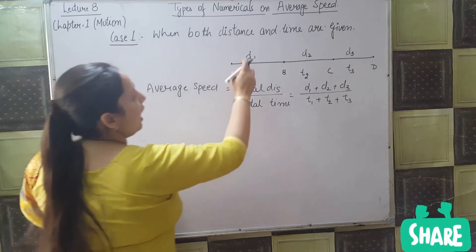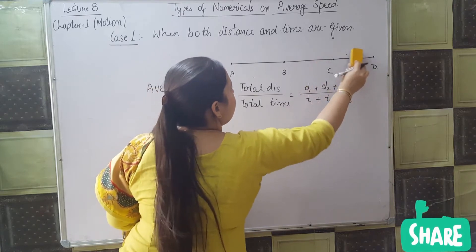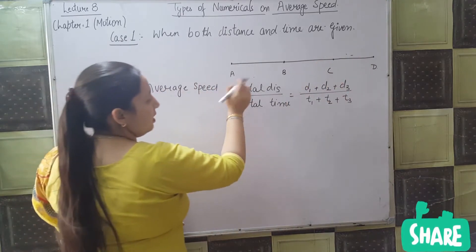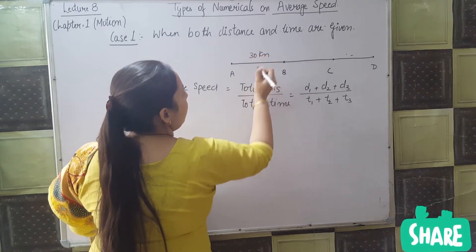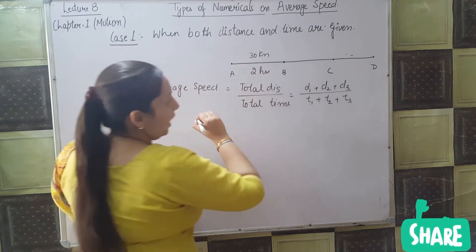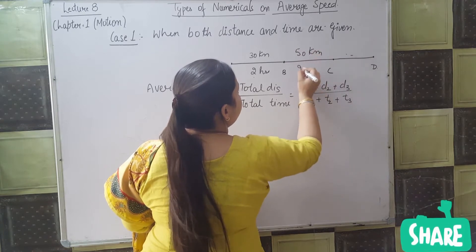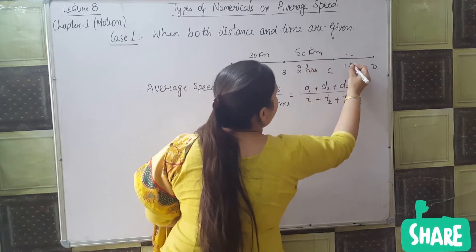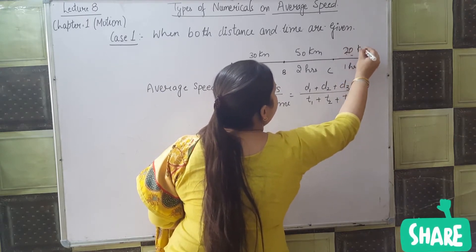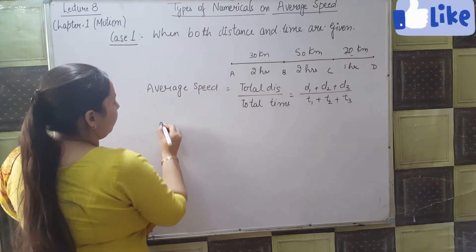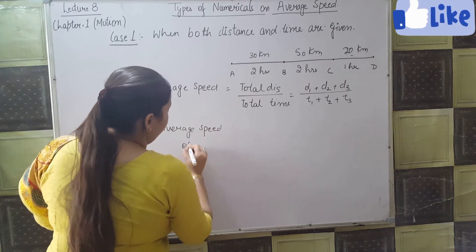Let us understand with an example. A person travels from A to B covering 30 kilometers in 2 hours. From B to C, he covers 50 kilometers in 2 hours. In the next 1 hour, he covers 20 kilometers. What will be the average speed of the person?